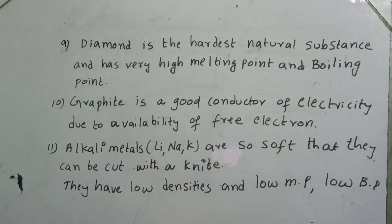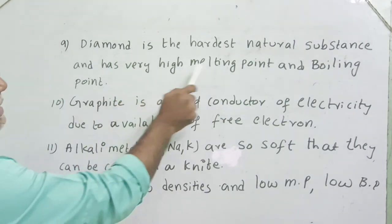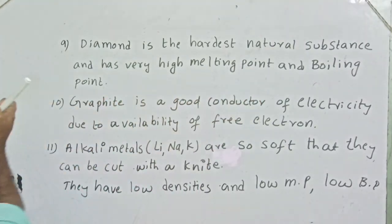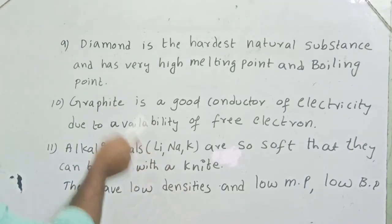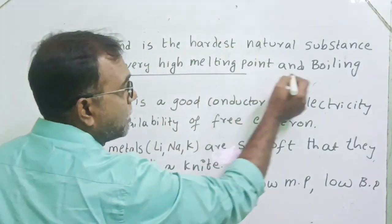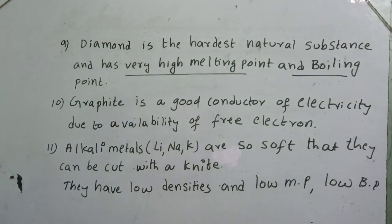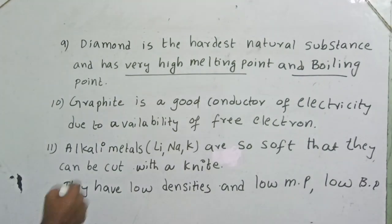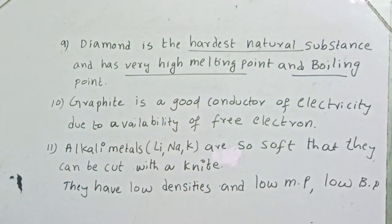Diamond is the hardest natural substance and has very high melting point and boiling point. Basically metals have high melting point and boiling point, but diamond also shows very high melting point and boiling point. It is an allotropic form of carbon, which is the naturally hardest substance and shows this property having similarity with metals.